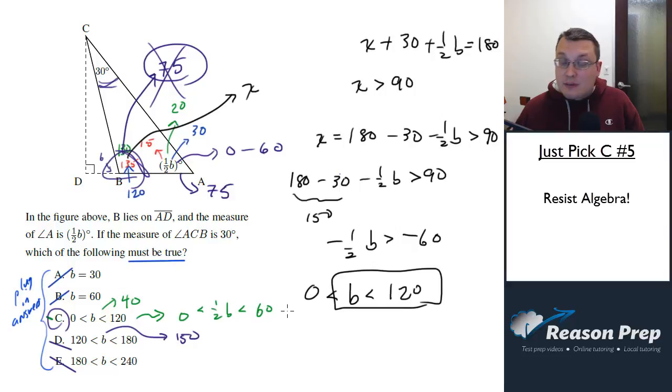Therefore B has got to be less than - remember to flip the sign - 120. And since an angle can't be negative, we know on the other end it's got to be greater than zero, and it can't be equal to zero because an angle can't equal zero. So long story short, we know our B has got to be less than 120, which gets us C.